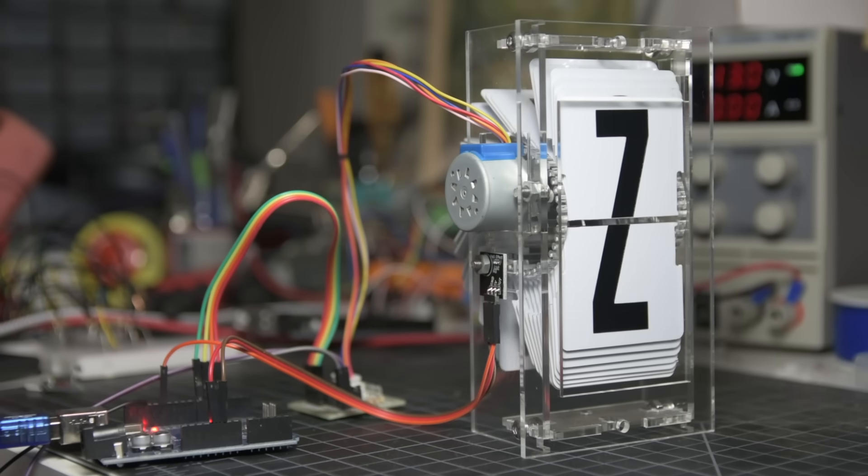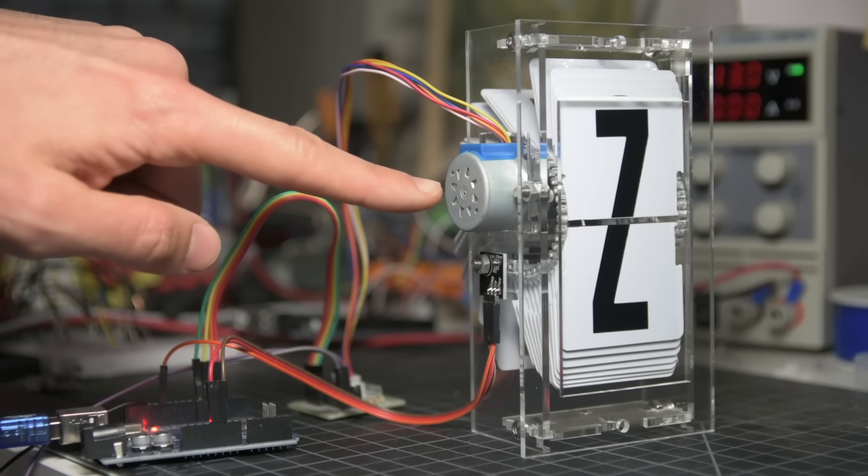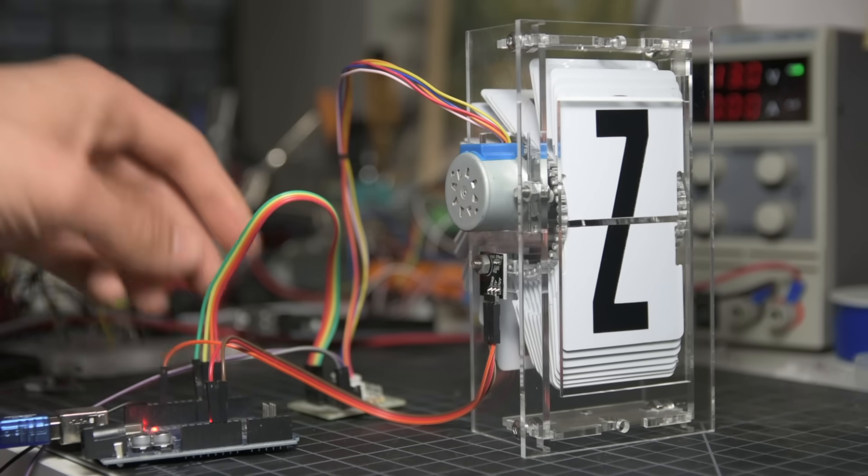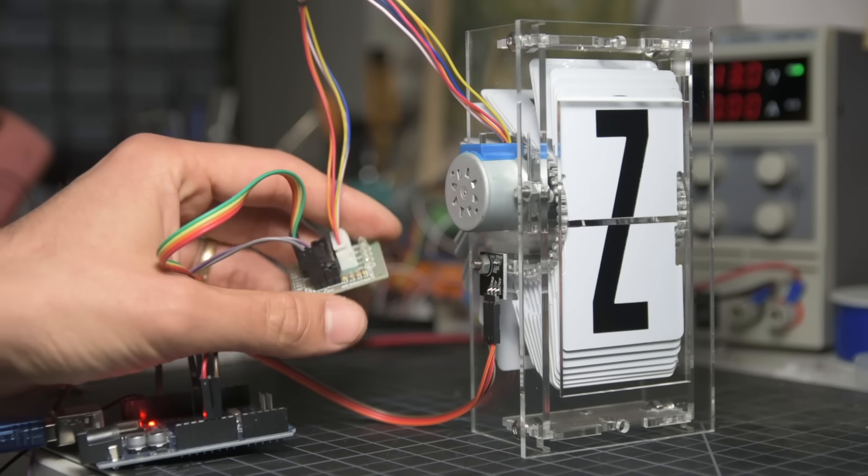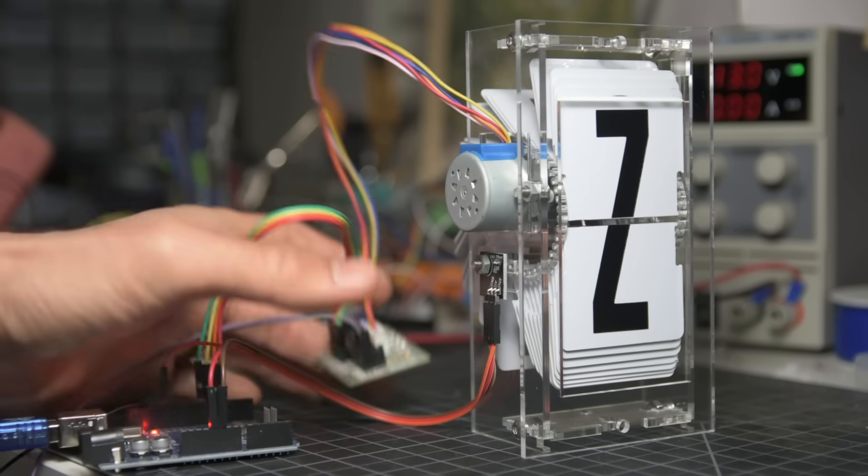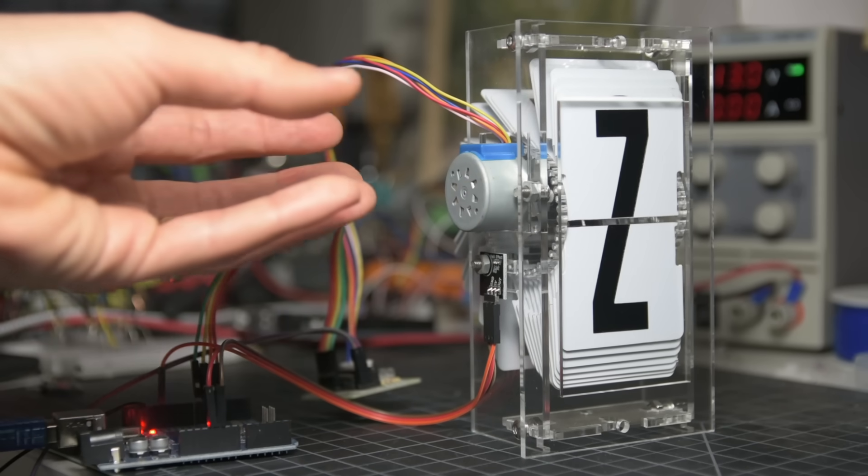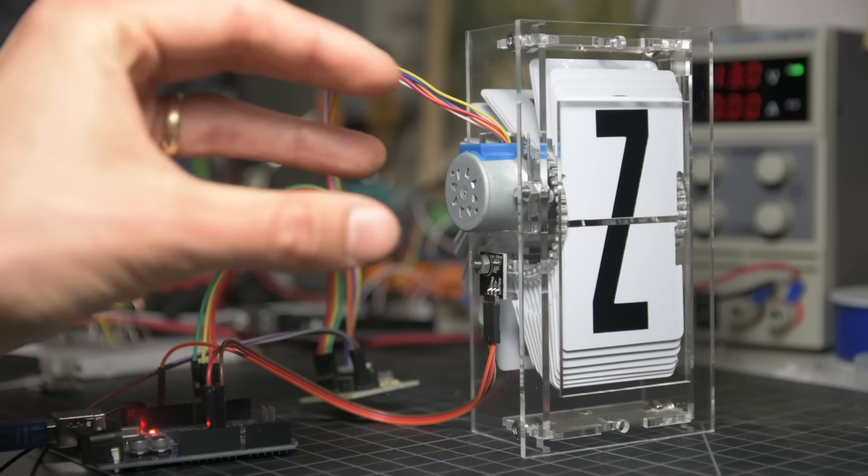To do that, the first key is the type of motor that we're using. This is a stepper motor, which is controlled using a series of pulses through this driver. That allows the Arduino to rotate the motor a precise number of degrees each time.